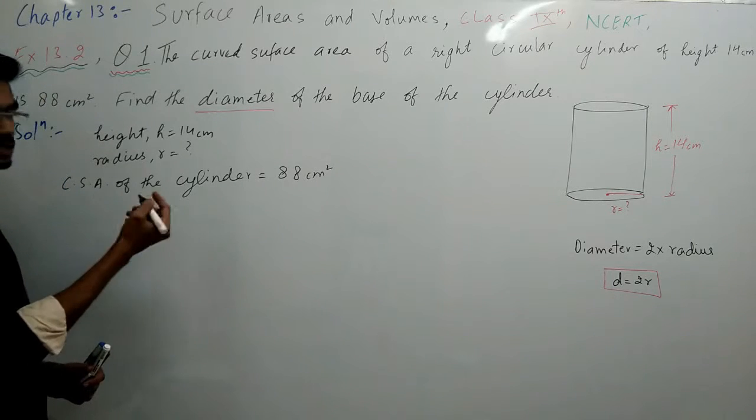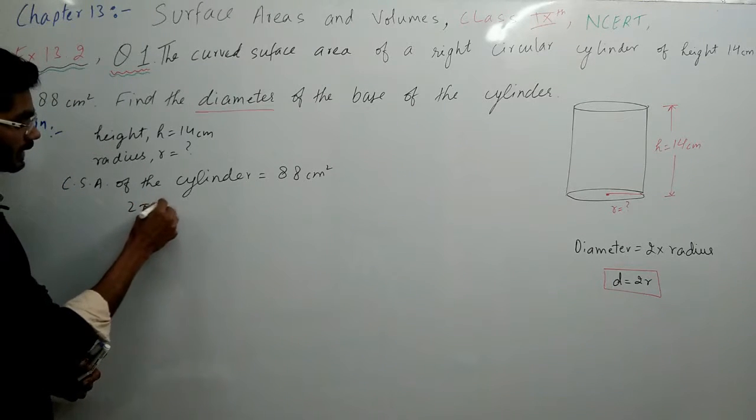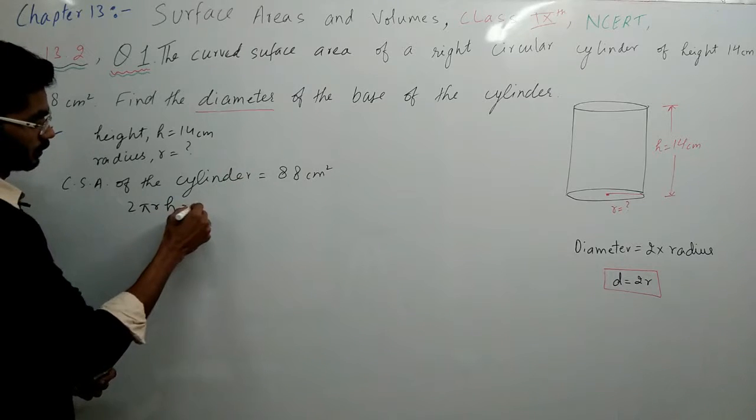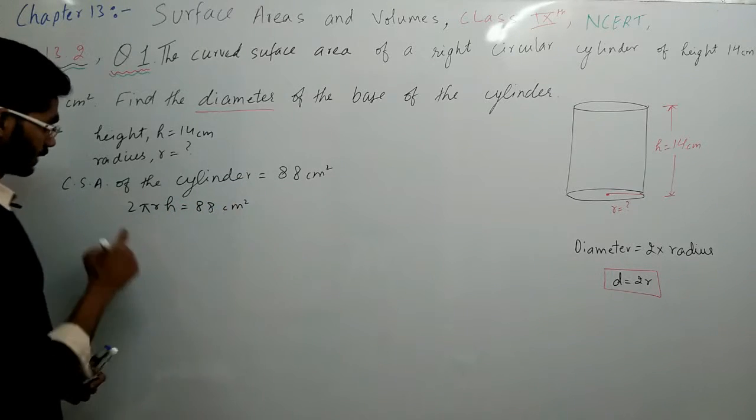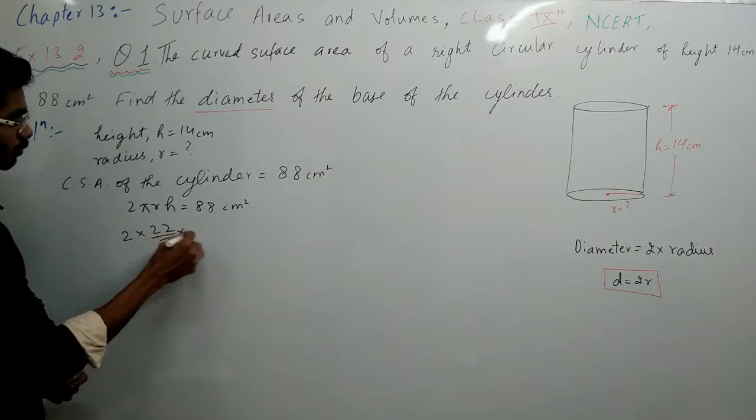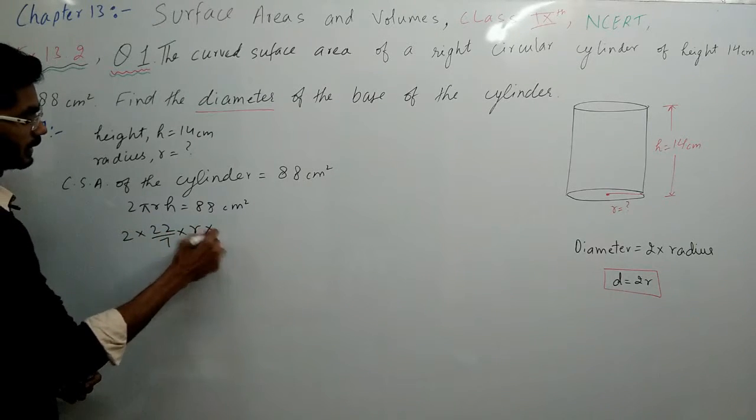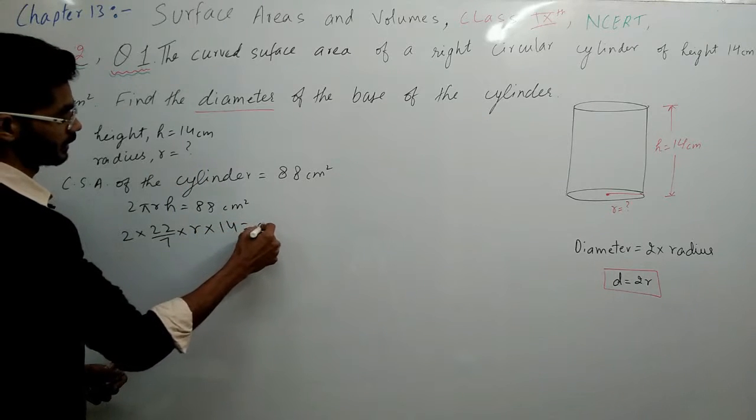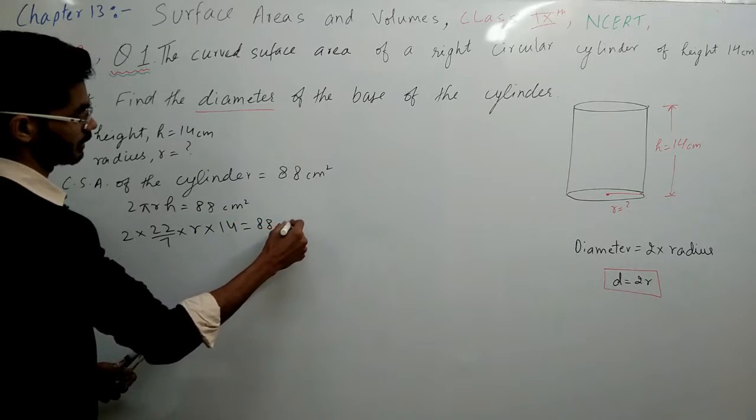To dekhiye curved surface area of this cylinder kya hota hai? 2 pi r into h which is 88 centimeter square. Ab dekhiye 2 into pi. Pi ki value kitni hoti hai? 22 over 7. r ki value nahi pata. Lekin height to mujhe pata hai 14 which is 88 centimeter square.